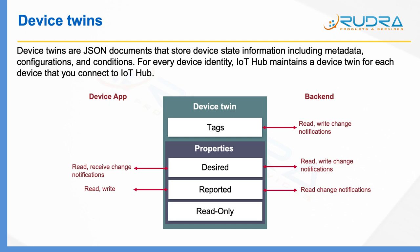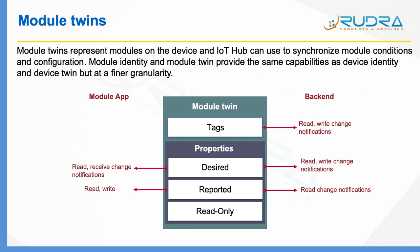This is all about device twin, but there is something else called module twin. Module twins represent modules on the device, and IoT Hub can use them to synchronize module conditions and configuration. Module identity and module twin provide the same capabilities as device twin and device identity, but at a finer granularity. Let me take an example to explain that.